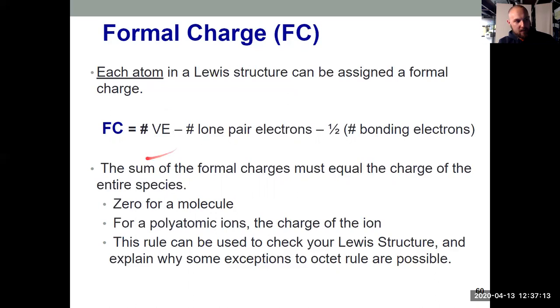So the number of valence electrons, which we already would have had to know when we were putting our Lewis structure together, minus the number of lone pair electrons that belong to that atom in our Lewis structure, minus one half the number of bonding electrons.